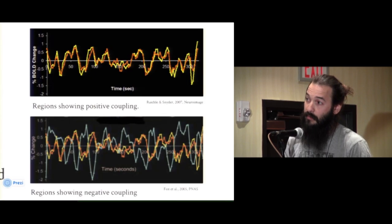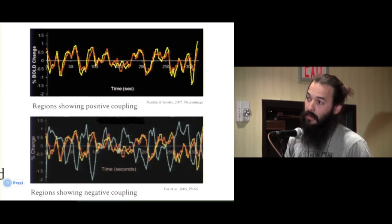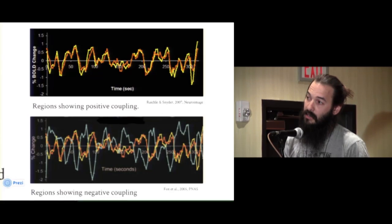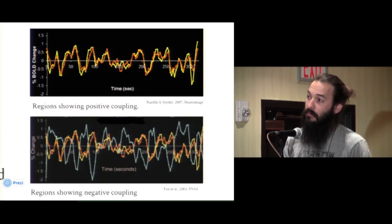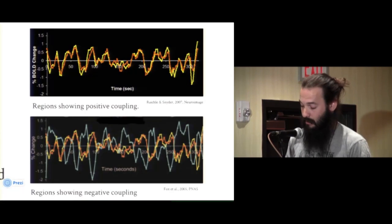In this bottom diagram, we can see there's another line — this blue time series — which is negatively coupled. You can see it's basically antiphase, in the opposite direction. Whenever the red and the yellow lines are up, it's down, and vice versa. So that region we would say is negatively coupled to the other two.